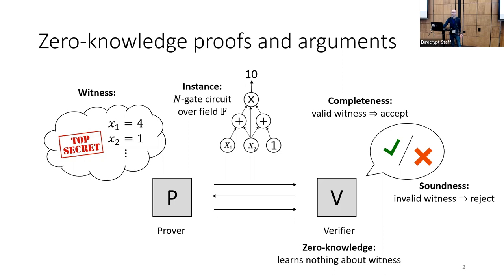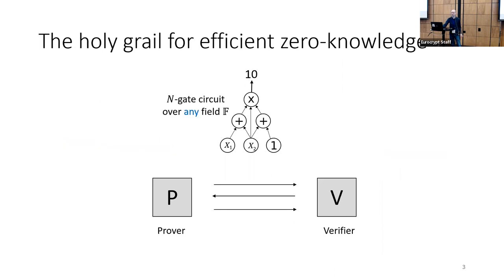What's the ideal zero-knowledge proof system in terms of efficiency? We'd want a zero-knowledge proof which worked for circuits over any finite field F. We'd want proving costs to be roughly the same as computing through the circuit — O(N) field operations for the prover. If proving is as fast as computing, we want verification costs and communication costs to be minimal: polylog N bits of communication and polylog N field operations for the verifier. Polylog N is a good target under standard assumptions.